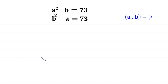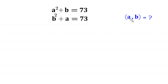Hello, welcome to how to solve this very nice system of equations. A squared plus B is equal to 73, and B squared plus A is equal to 73. We need to find all possible values of A and B. So, let us start.